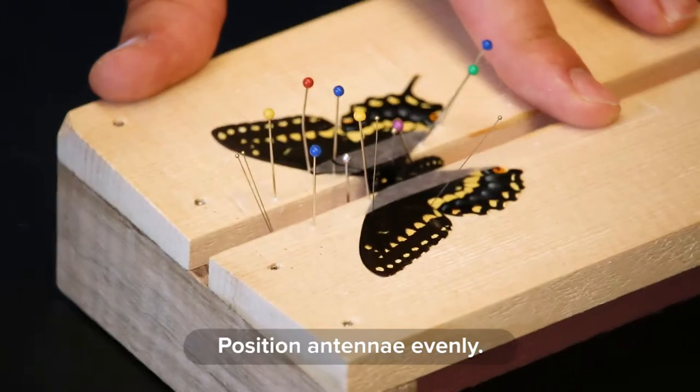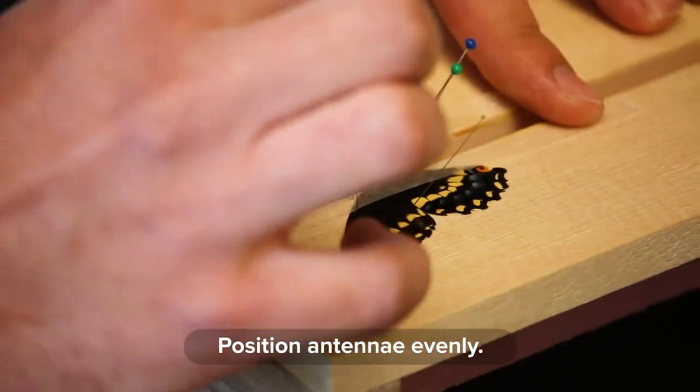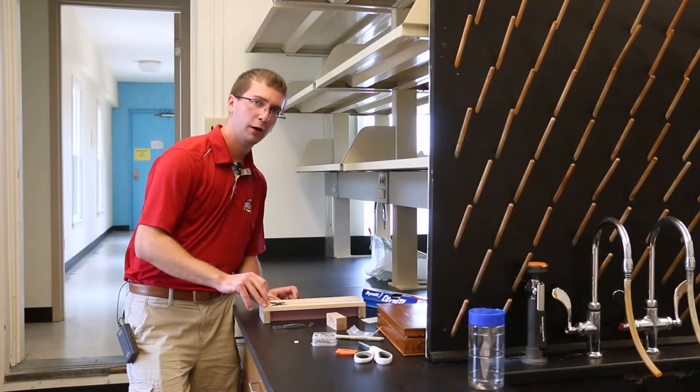Move your antennae to where you want them to be once it dries. This is another area where you want to try to be symmetrical.